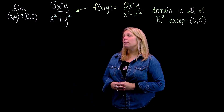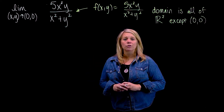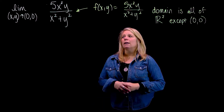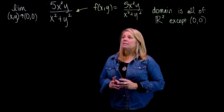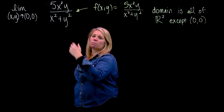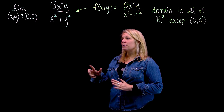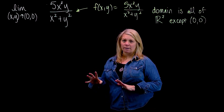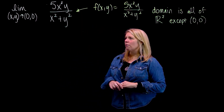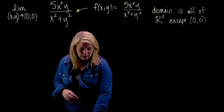In the last video we used a strategy of simplifying the function to get convenient cancellations, arriving at a similar function that we could just plug the point into. That's not going to work here. In the last video there was a common factor of x²+y², but that won't happen here — I can't factor the numerator. Some students try desperation algebra, but you should convince yourself that whatever you think you can cancel here doesn't actually cancel.